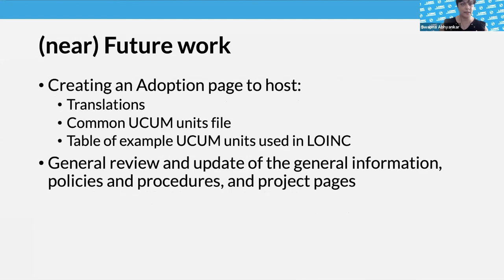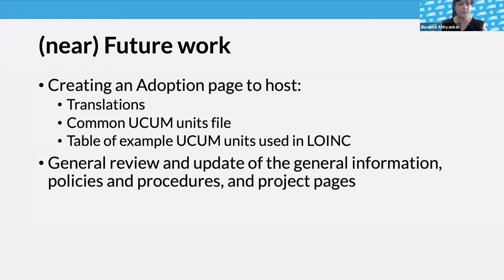Other issues like versioning, frequency of publication, and adoption would be really interesting to talk about. We're also working on putting up an adoption page that could host translations, and the common UCUM units file — which is currently released with the LOINC release — could actually move to a new home. We'd also like to publish a full table of example UCUM units that are used in LOINC. Some of the example UCUM units in LOINC aren't in the common UCUM units file, which has caused some grief. That's the reasoning for creating the separate table — so you'd have the whole list without calling it 'common.'